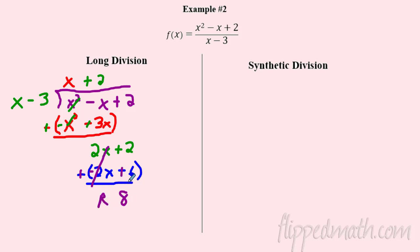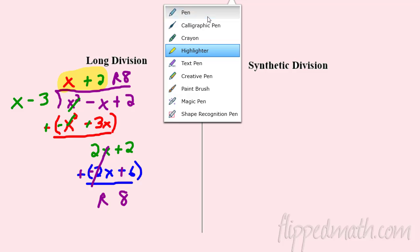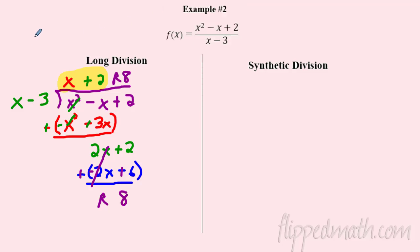So you have a remainder of 8 — but I don't really care about the remainder. All I care about is the first part, which I'll highlight: that is the equation of the slant asymptote. The remainder I'm not concerned with. So the slant asymptote is y = x + 2. Excellent!